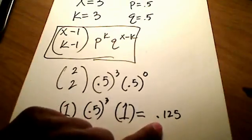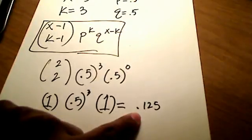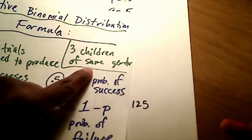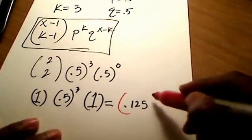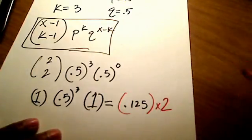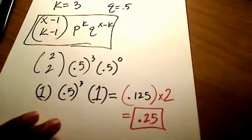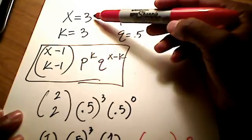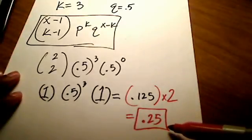Now 0.125 is not exactly the final answer. This is actually the answer if I was only looking for 3 boys or 3 girls. Since I'm looking for 3 children of the same gender and didn't specify which gender, it could be 3 boys or 3 girls, so I have to double the answer — multiply it by 2 — and come up with 0.25. So if you have 3 trials where all 3 are exactly the same gender, the probability is 0.25.